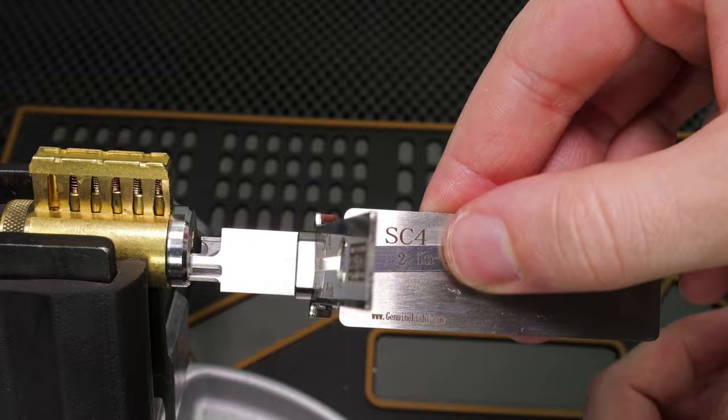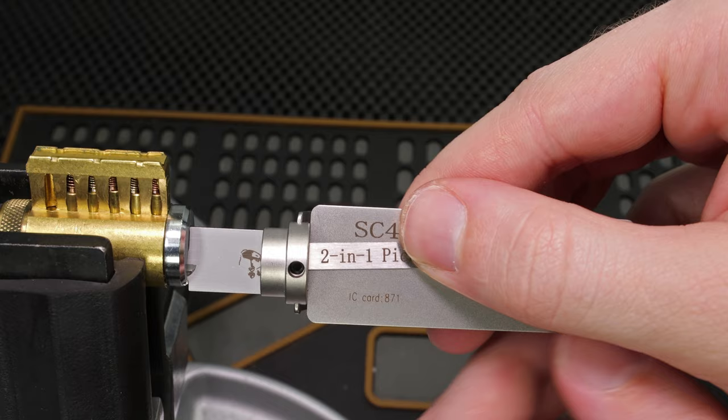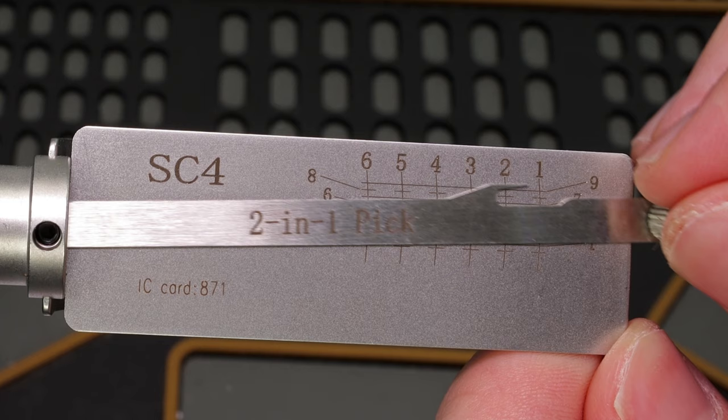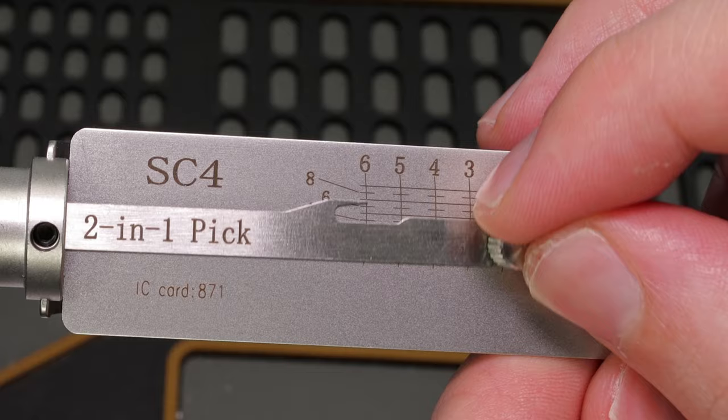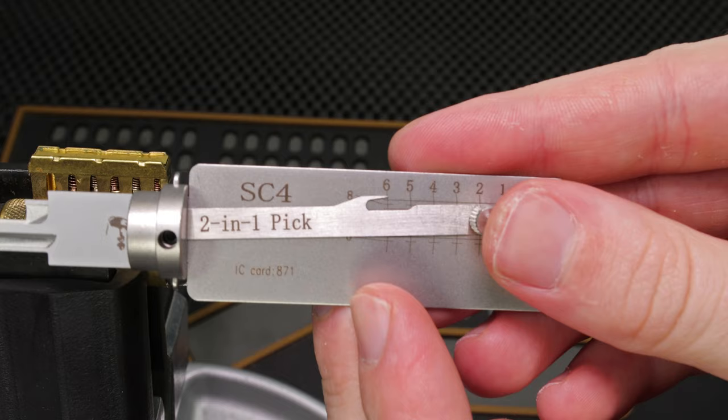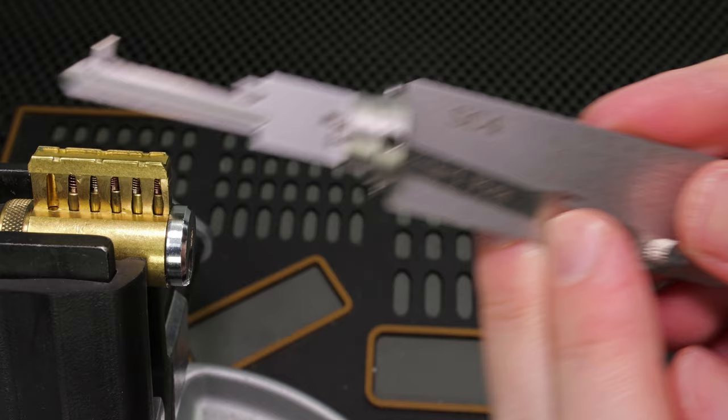And now we're going to just finish this up by decoding one last time with the original Lishi SC4, and this is the $120 more expensive one. So once again we're getting a 6. Then we're getting a 7. Then we're getting a 3. Then we're getting a 5 and a 5. And as you can tell there's nothing in the last chamber. So as is right now, these two tools are working very well and I could say that they're pretty interchangeable. If you're looking to save some money, right now I'm pretty happy. But let's load up a Kwikset lock and see how we do.